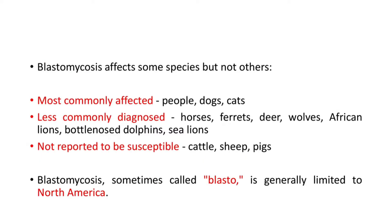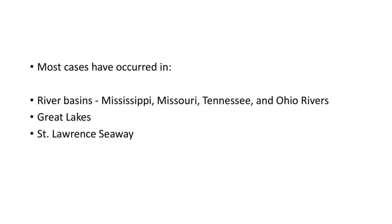Blastomycosis affects some species but not others. Most commonly affected are humans, dogs, and cats, and less commonly diagnosed in horses, ferrets, etc. Not reported to be susceptible are cattle, sheep, and pigs. Blastomycosis, sometimes called blasto, is generally limited to North America. Most cases have occurred in river basins like the Mississippi, Missouri, Tennessee, Ohio, Great Lakes, and St. Lawrence Seaway.